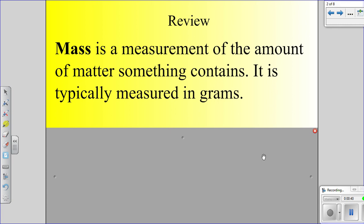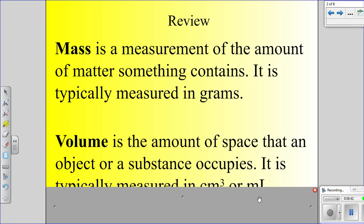The other term we need to understand is volume. Volume is the amount of space that an object or a substance occupies. It's typically measured in cubic centimeters or in milliliters. Now this little three right here you may not have seen that before. That means cubed. Sometimes you'll see a little two there and that means squared. It basically means you're going to multiply it by itself three times.